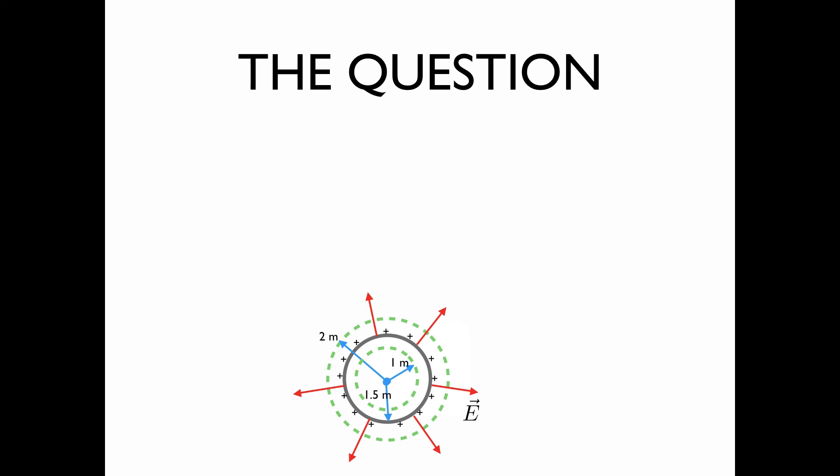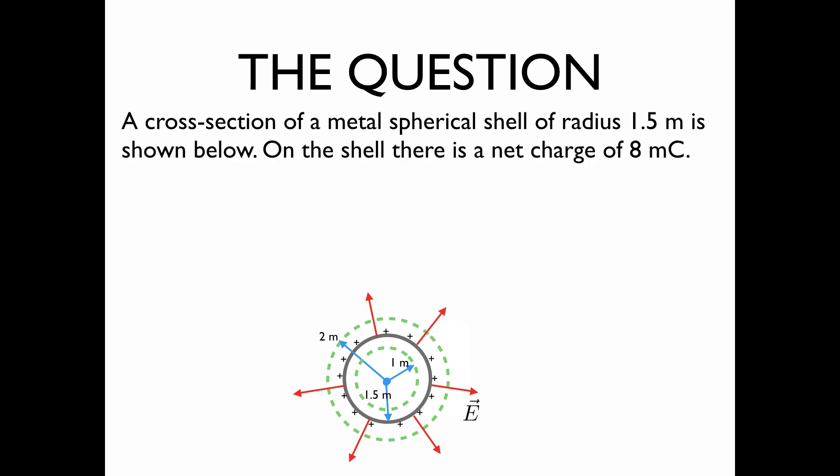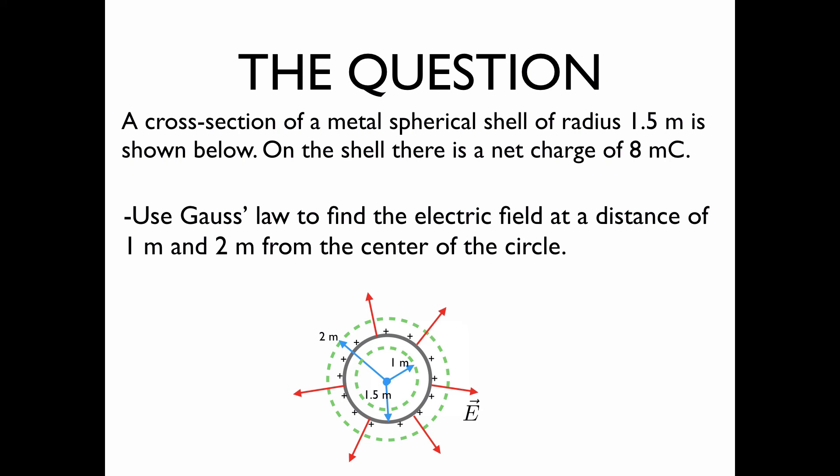The Question: A cross section of a metal spherical shell of radius 1.5 meters is shown below. On the shell there is a net charge of 8 millicoulomb. We'd like to use Gauss's Law to find the electric field at a distance of 1 meter and 2 meters from the center of the circle.